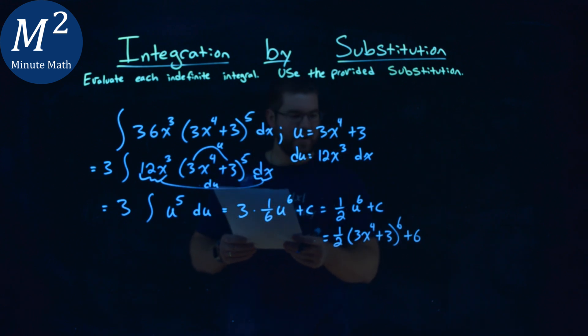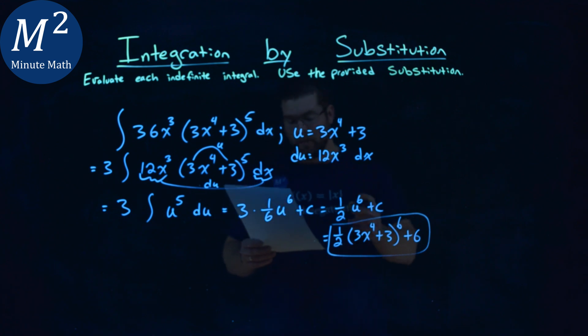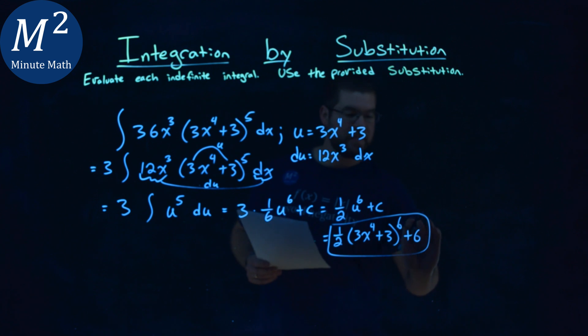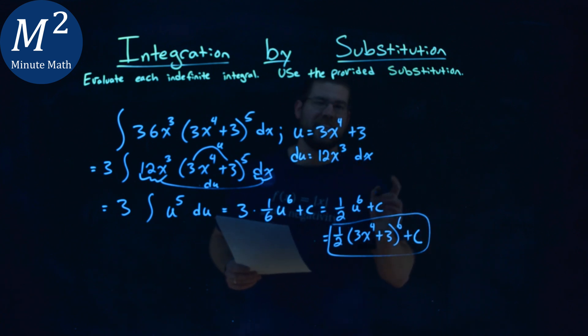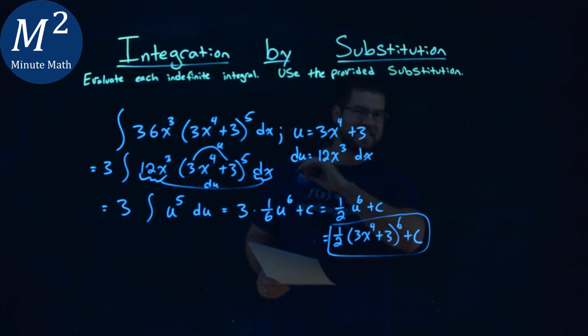And make sure I got it right. I did. We're good. And so again, our final answer here is 1/2 times 3x to the 4th power plus 3 to the 6th power plus c, and that is the final answer. Don't forget the plus c right there.